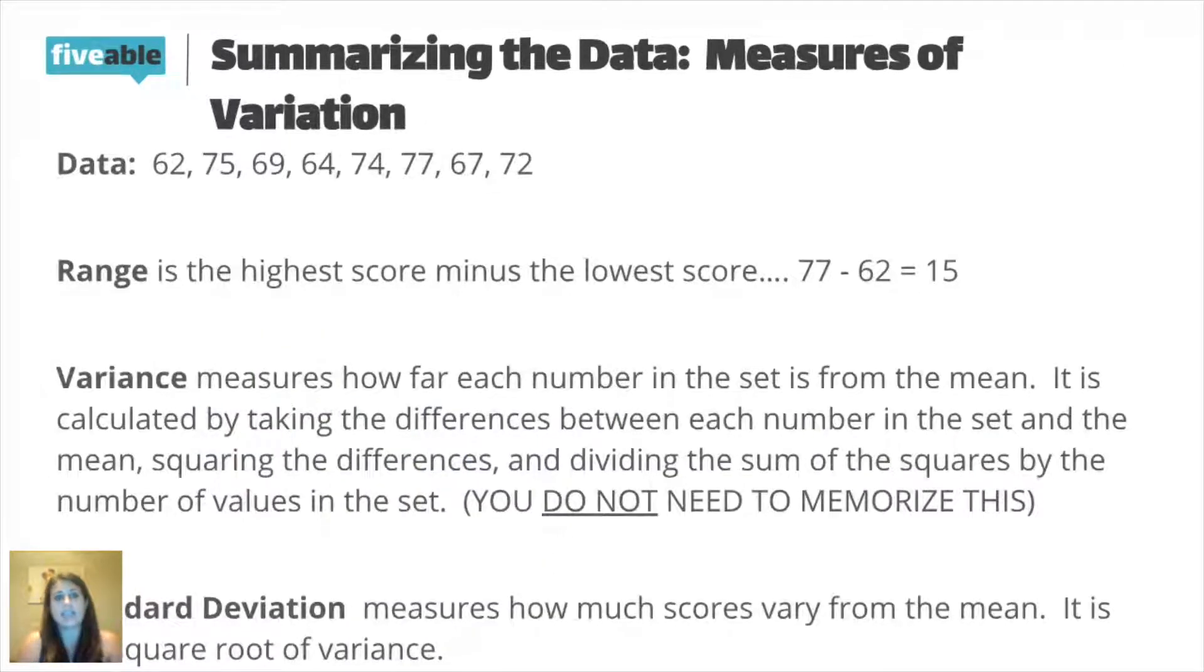So I have a data set here with just some numbers listed. The first thing that we can use to measure the variation in a data set is the range. The range is really just a crude measure. I take the highest number, so in this data set, the highest number is 77, and the lowest score, which is 62, and I just subtract 77 minus 62. So the range of my data is 15. That doesn't really tell me a whole lot, because there could be a lot more numbers in between there or very few numbers in between there. So the range is a crude measure. We could use it, but there's other methods that give us much better description.